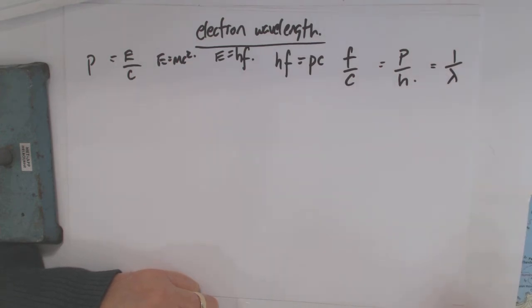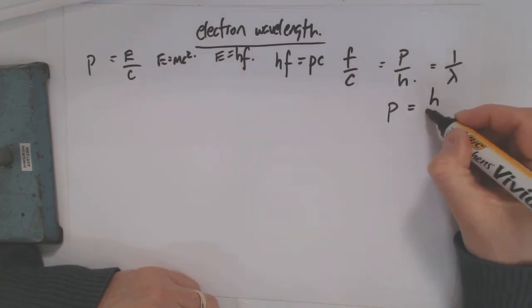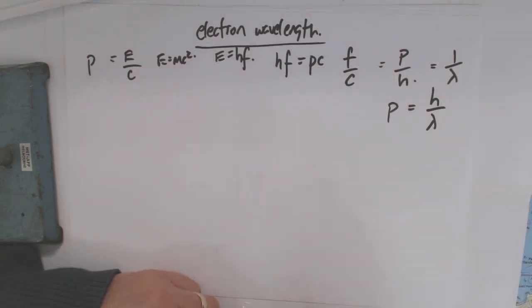It's equal to 1 over wavelength. So we can basically then say that wavelength is equal to H, or sorry, P is equal to H over wavelength. We'll relate it in terms of P. P is equal to H over wavelength, right? So interesting thing.